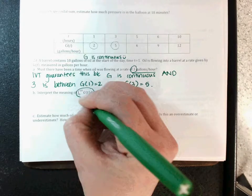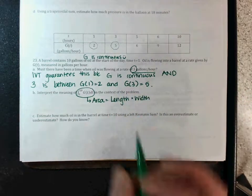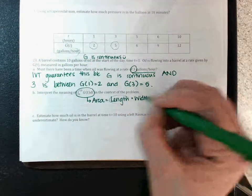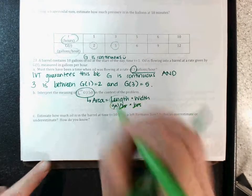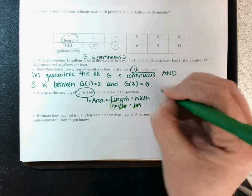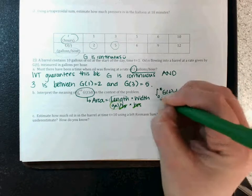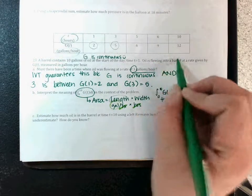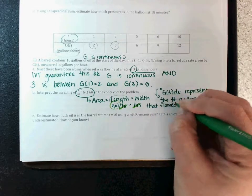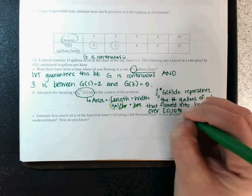Part B asks to interpret the meaning of the integral in context. An integral means area, and area is length times width. The y-values have units of gallons per hour and the width is measured in hours, so when multiplied the hours cancel — units are gallons. The integral from 0 to 10 of g(t) dt represents the number of gallons of oil that flowed into the barrel from t = 0 to t = 10 hours.